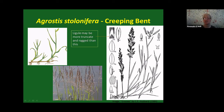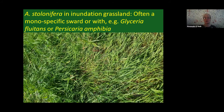Agrostis stolonifera also tends to have a slightly contracted panicle, especially after flowering. It quite often grows in swards in inundation grassland — there aren't many grasses that exist in completely flooded grassland. You might find Glyceria fluitans and Agrostis stolonifera forming a swathe, or even just Agrostis stolonifera on its own in completely flooded grassland. If you see a triangular green leaf, slightly purplish stem and leaf sheaths, it's probably Agrostis stolonifera.